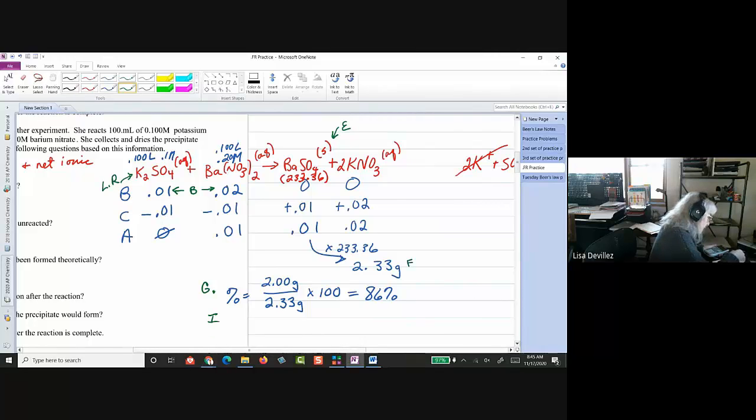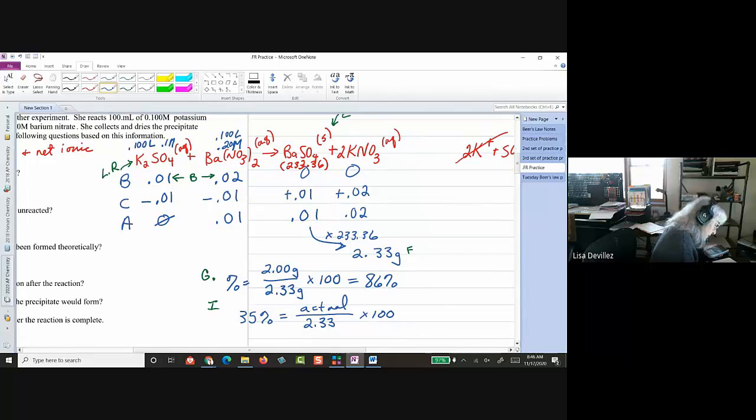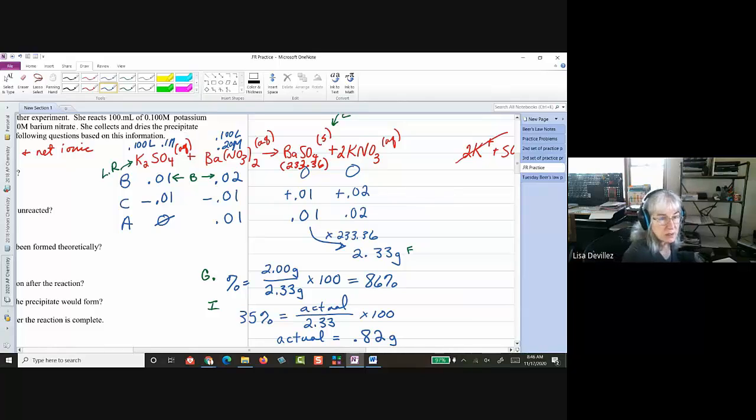So, if I have 35 percent, equals my actual, over my theoretical, times 100. And, so, if I solve that, my actual is going to equal, let's see, 0.35 times 0.82 grams would be my actual, if it's a 35 percent yield.